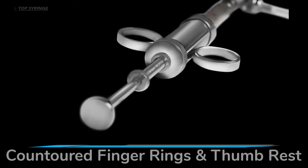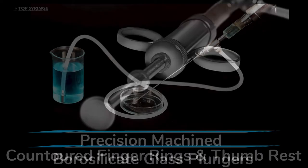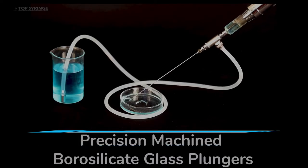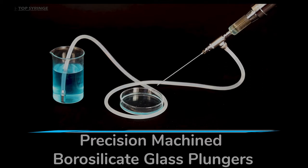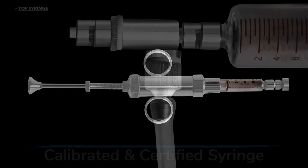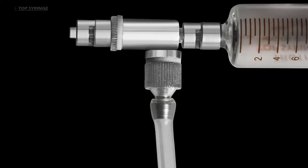Each model has contoured finger rings and thumb rest that allows effortless, non-fatiguing one-handed operation. At the core of the hand operated syringe are precision machined borosilicate glass plungers moving inside precision bore and graduated ground borosilicate glass barrels which form a liquid tight seal without the need of O-rings.